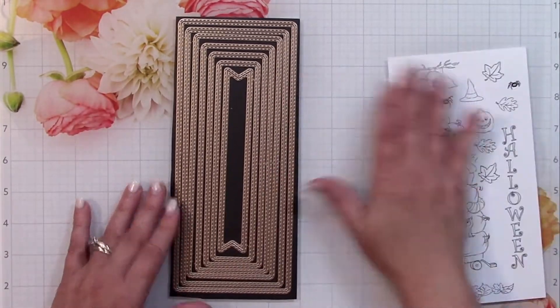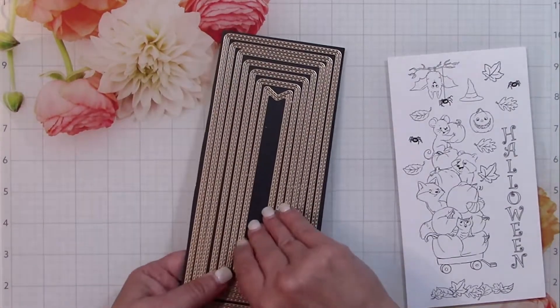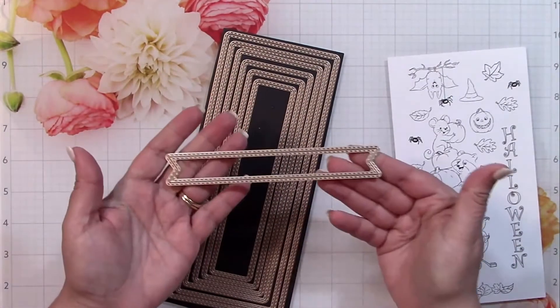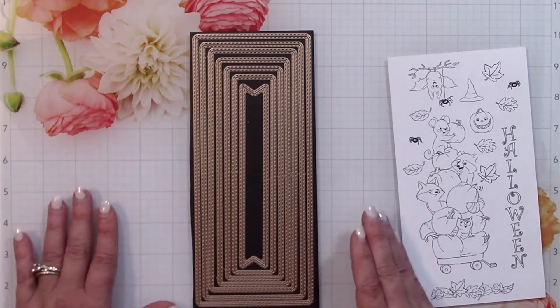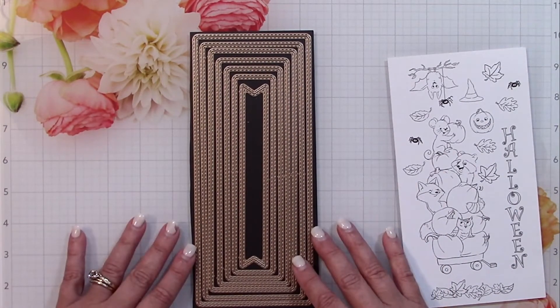This is a new die set made also for slim lines. It's the first and only one that Art Impressions has, and it includes that flag. There are six different layers here you can work with and it's fantastic.